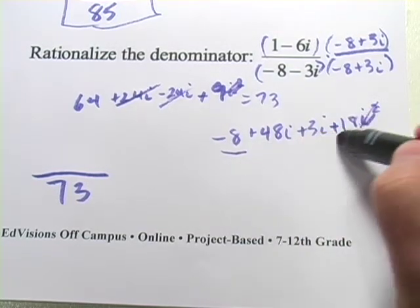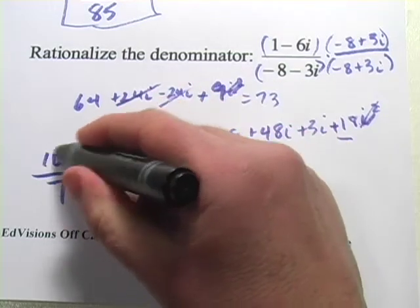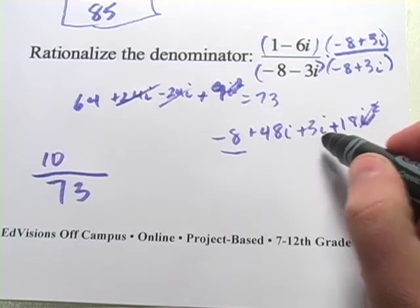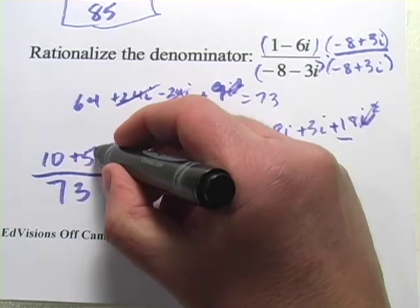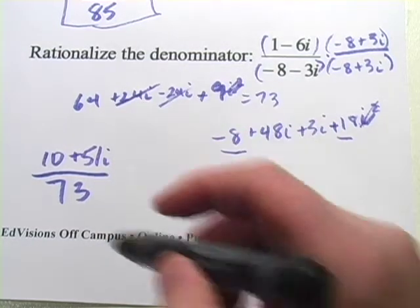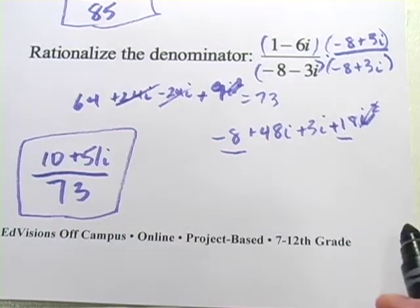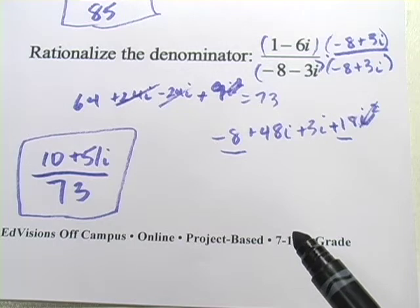So we've got negative 8 and positive 18. That's 10. And 48i and 3i, that's 51i. And that is our answer. So that is how to rationalize the denominator in these quotients with complex numbers.